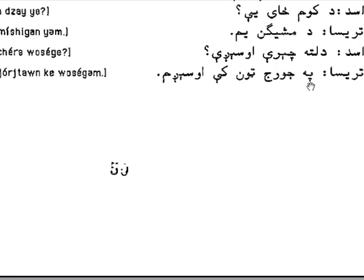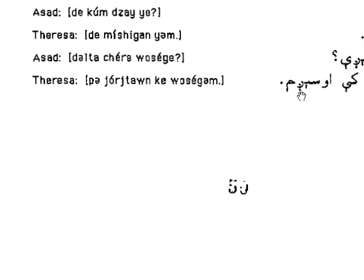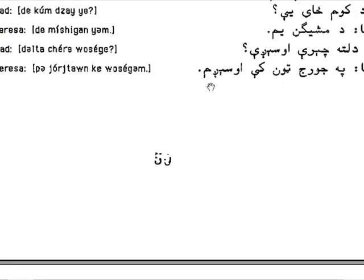'Pa' and 'ke' are particles — 'pa' and 'ke' mean 'in' together. The personal ending 'm' represents the singular personal ending. 'Pa georgetown ki osegi um' — 'pa' and 'ke' mean 'in,' so the full phrase means 'in Georgetown I live.'